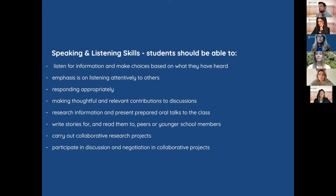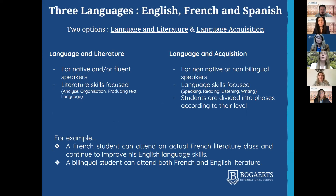We have three languages at school: English, French and Spanish. For English and French, students have two options — language and literature and language acquisition. For Spanish, for the moment it's only language acquisition. Language and literature is for native and/or fluent speakers and is literature-skills focused; language acquisition is for non-native or non-bilingual speakers and is language-skills focused. Students are divided into phases according to their level.